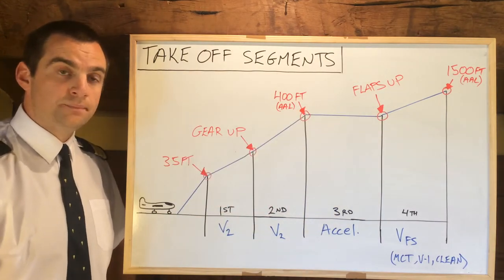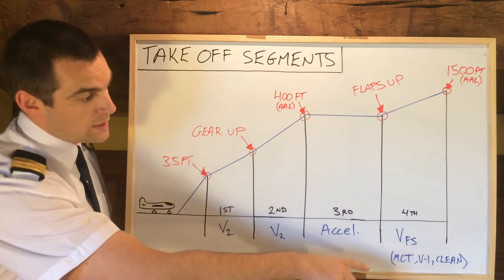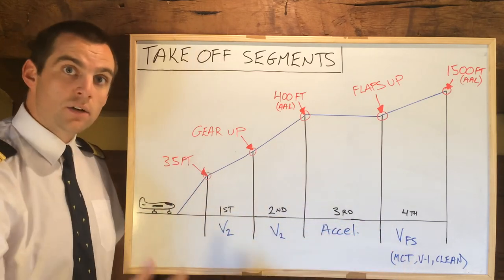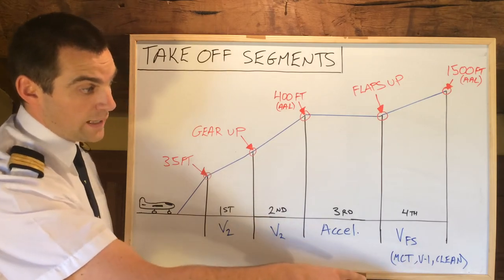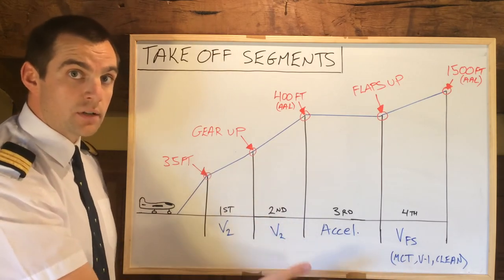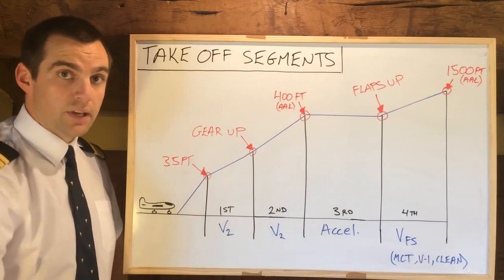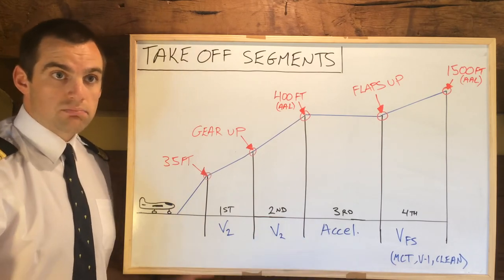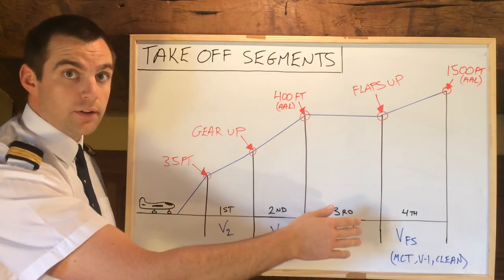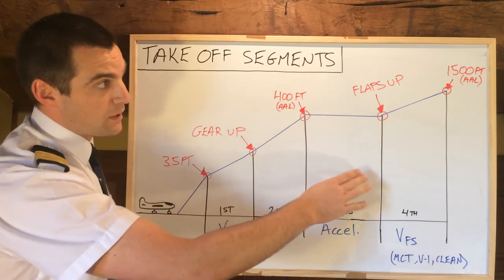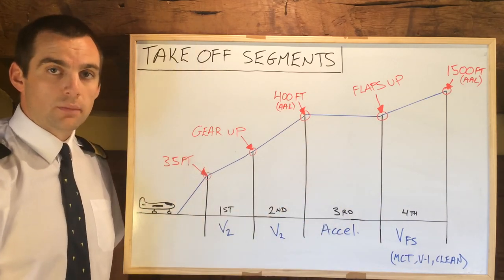Now when we get flaps up, we can now keep climbing, and the fourth stage is flown at VFS, which is final segment speed. It's based on an aircraft in clean configuration, max continuous thrust, and one engine inoperative. That's where VFS comes from — it's close enough to Vstall times 1.25. That final fourth segment goes from flaps up, up to a minimum of 1,500 feet above aerodrome level.